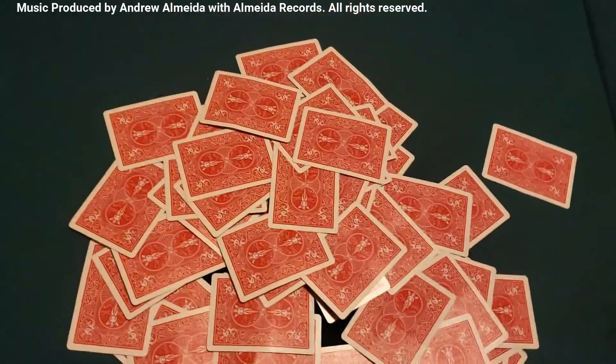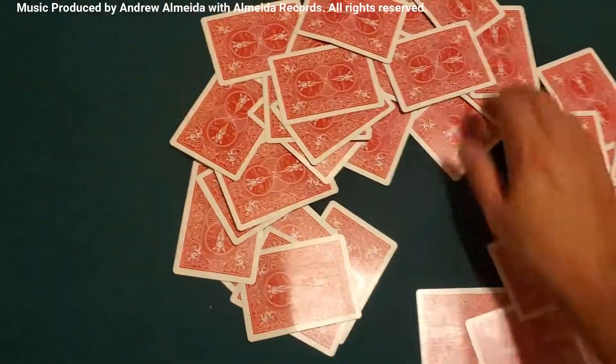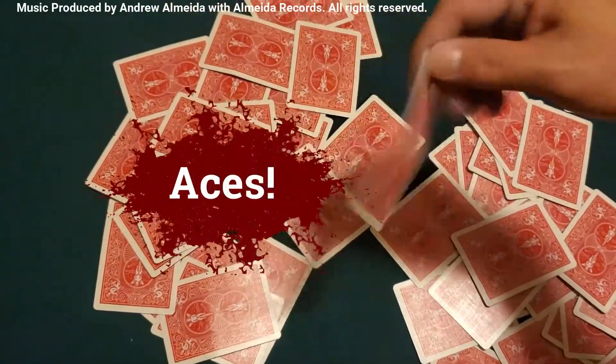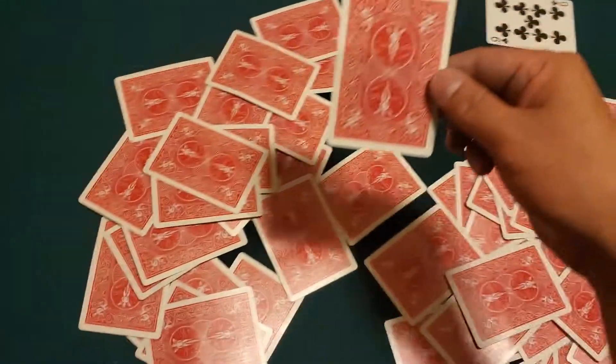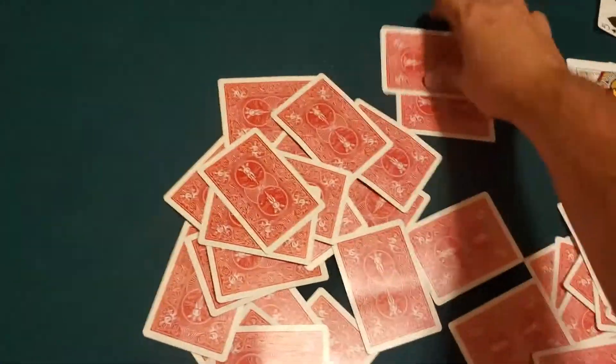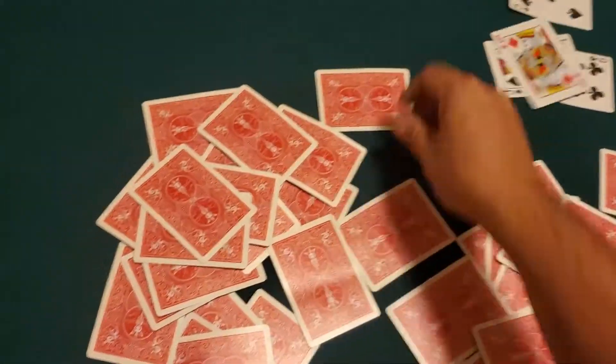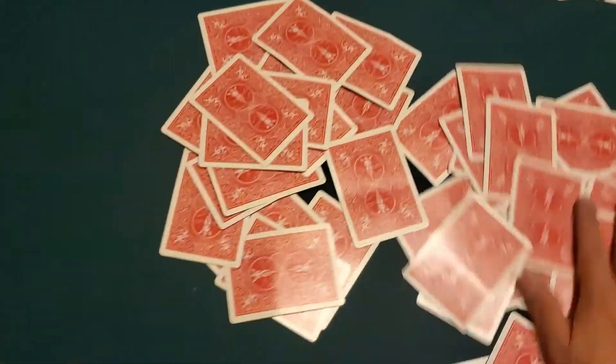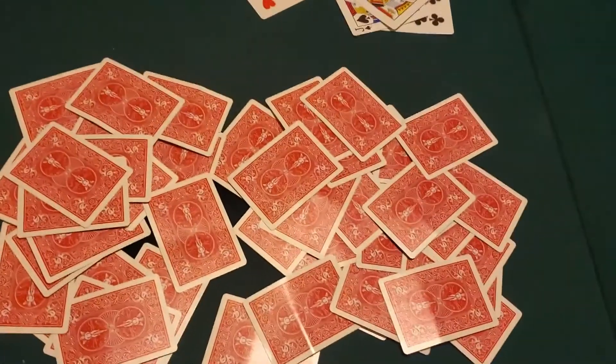I can tell you every single card in this entire deck. We have a nine of clubs, five of spades, jack of spades, king of diamonds, ten of clubs, six of hearts. Now how do I do this? I have a device that I got from how to mark cards.com.